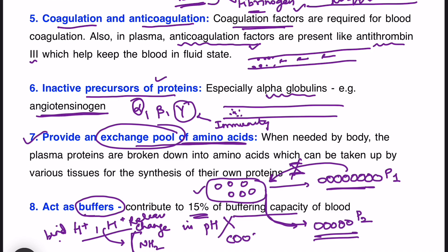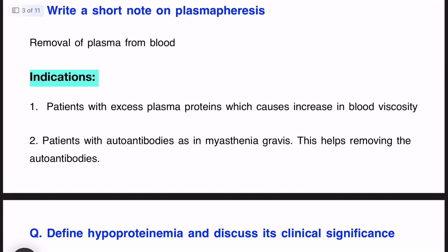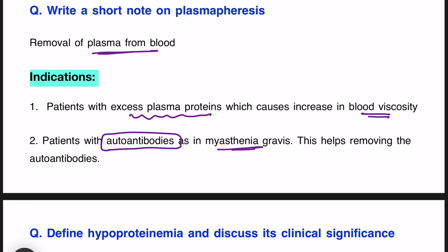Moving on to the next question: what is plasmapheresis? Plasmapheresis is removal of plasma from blood — we take out the plasma and exchange it with other plasma. It is done to remove excess plasma proteins when there is increased blood viscosity. There are certain conditions in which plasma proteins increase too much, raising blood viscosity and resistance to flow, increasing blood pressure, and decreasing oxygen supply to tissues. A second indication is patients with auto-antibodies, as in myasthenia gravis, who are not responding to other treatment — plasmapheresis helps remove the auto-antibodies.